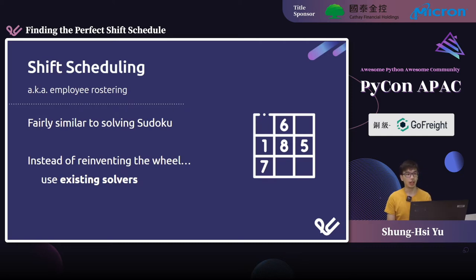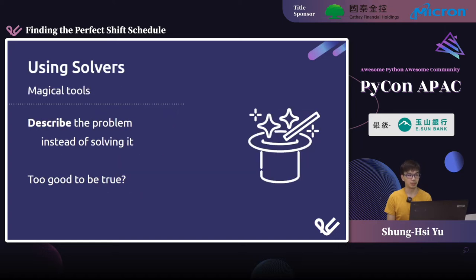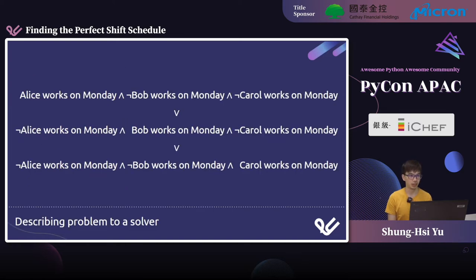But as a software engineer, one of the things we try hard to do is not reinvent the wheel without good reason. An existing solution to our problem is a program called solvers. Solvers are, in my opinion, quite a magical tool. All you need to do is describe the problem to the solver, and the solver will solve it for you. The catch is that the solver only operates with booleans, so you have to describe your problem entirely using booleans. It may look quite intimidating at first, but things will get clearer once we get into Python.